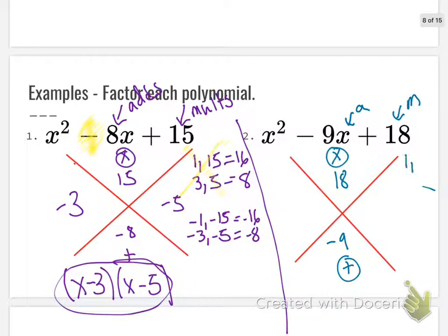But as it goes, I'll still show them. 1 times 18, 2 times 9, 3 times 6. Okay, so that would give me negative 1 times negative 18. Negative 2 times negative 9. Negative 3 times negative 6.